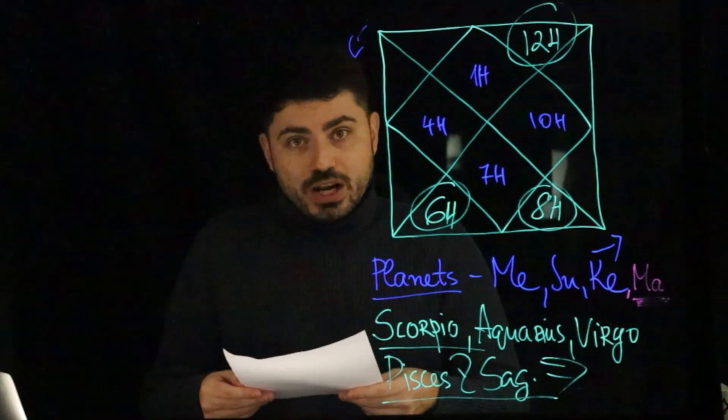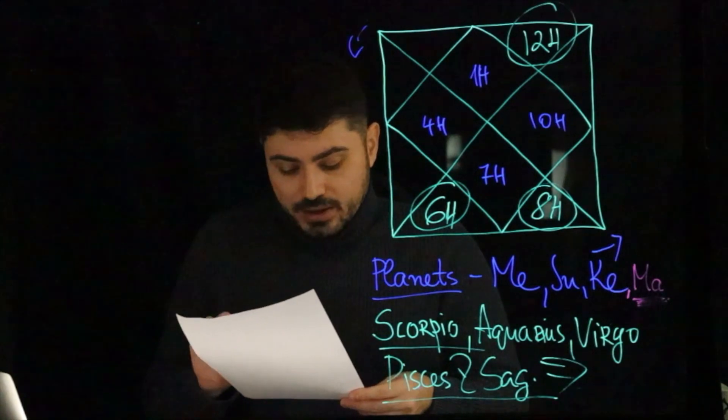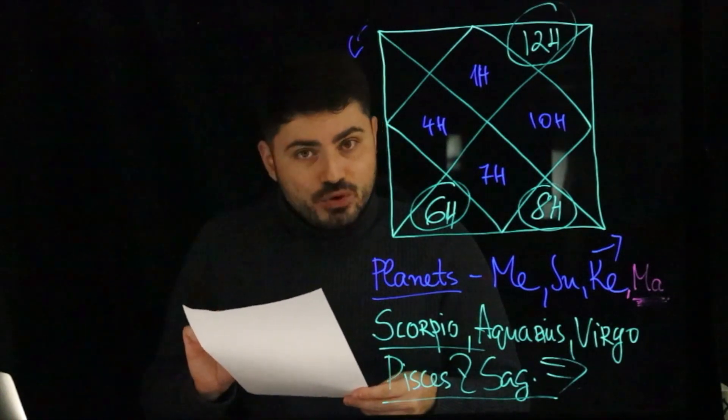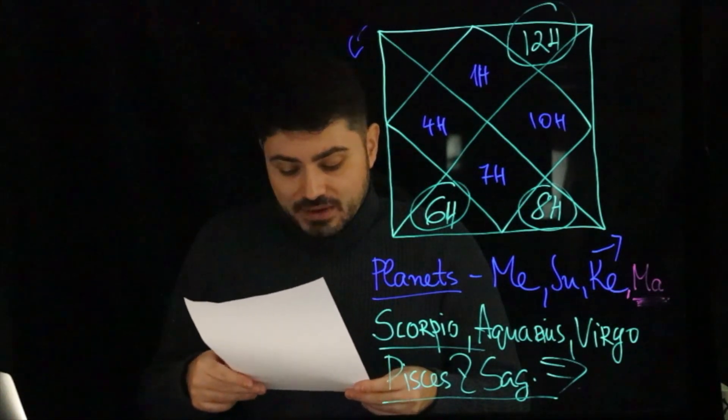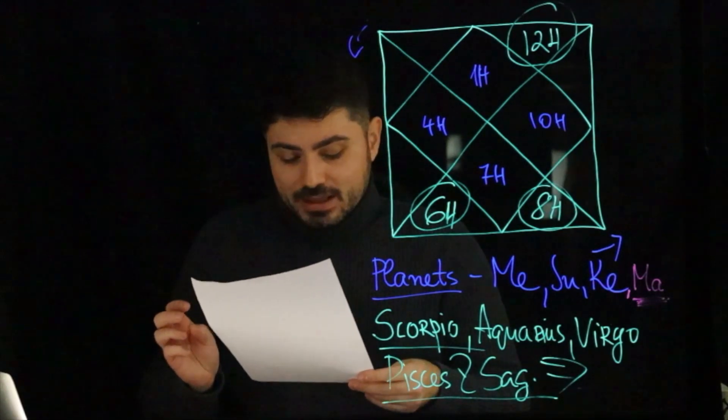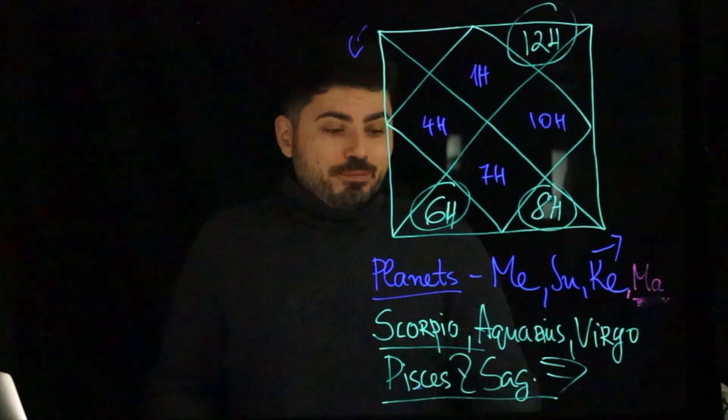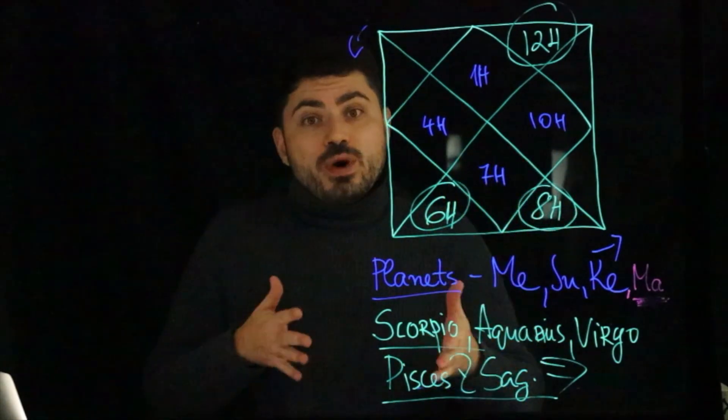Bharani, Mrigashira, Ashlesha, Uttara Phalguni, Hasta, Shravana, Shatabhishak, Purva Bhadrapada, Uttara Bhadrapada. These are the main nakshatras, so you can check this and you can see whether you have it in your own chart.